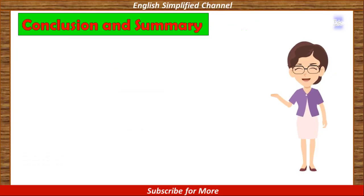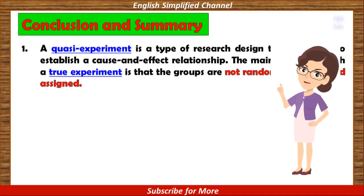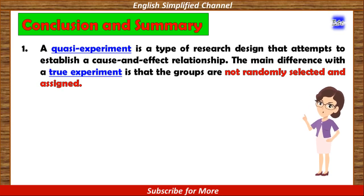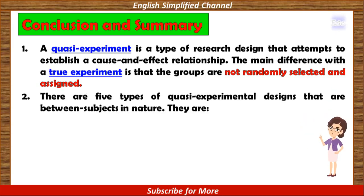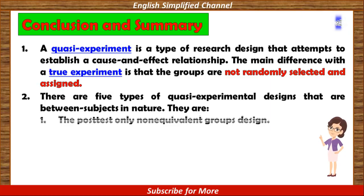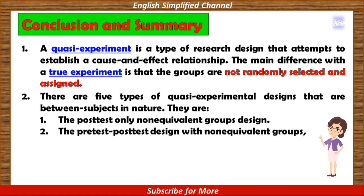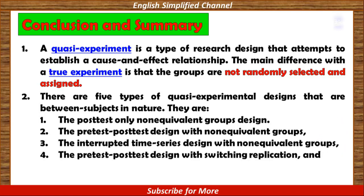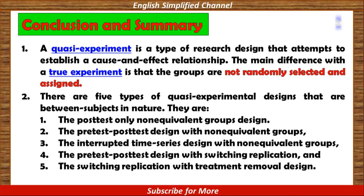Now let's make the conclusion and summary. 1. A quasi-experiment is a type of research design that attempts to establish a cause and effect relationship. The main difference with a true experiment is that the groups are not randomly selected and assigned. 2. There are five types of quasi-experimental designs that are between subjects in nature: 1. Post-test only non-equivalent groups design. 2. Pre-test post-test design with non-equivalent groups. 3. Interrupted time series design with non-equivalent groups. 4. Pre-test post-test design with switching replication. And 5. Switching replication with treatment removal design.